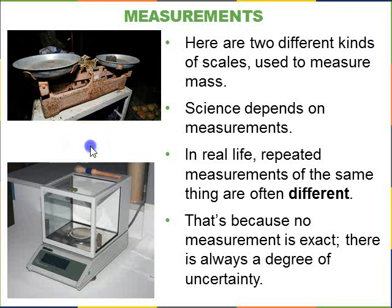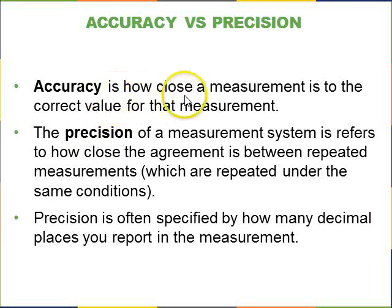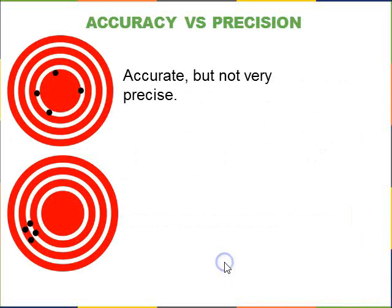So on that note we define accuracy and precision. Accuracy is how close a measurement is to the correct value for that measurement. Precision refers to how close the agreement is if you make the same measurement again and again. How precise you are is often portrayed by how many decimal places you put. For example, this is from the text. It's about a GPS system trying to locate a restaurant at the center of a bullseye. If you take four different measurements with your GPS and they're scattered around the center, that's accurate but not very precise because the scatter is so large.